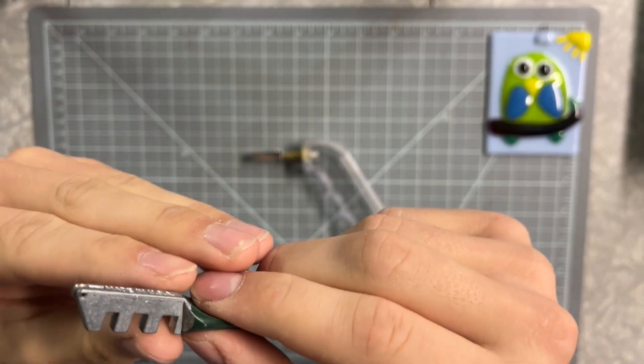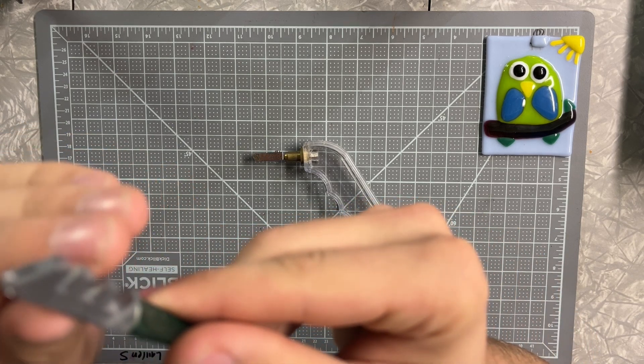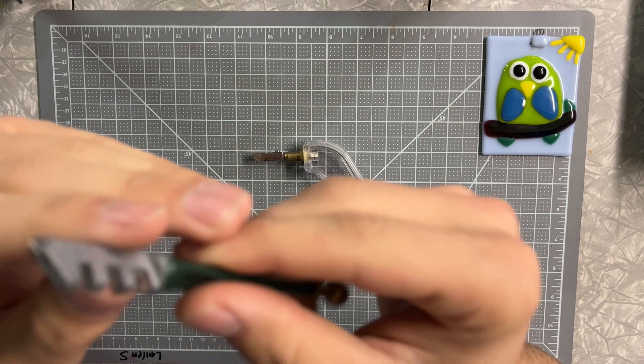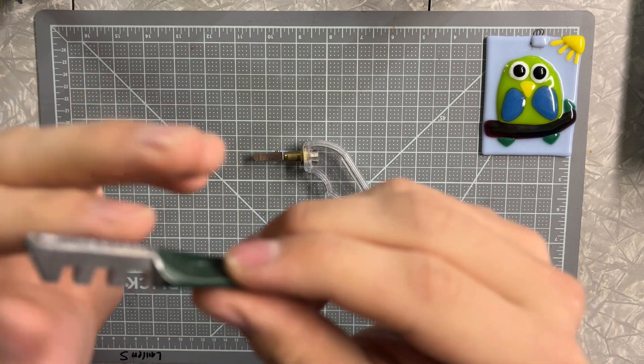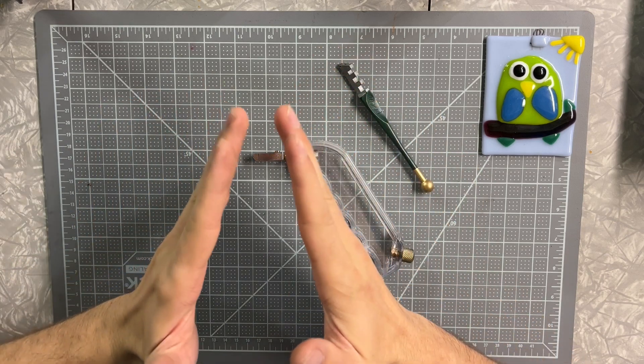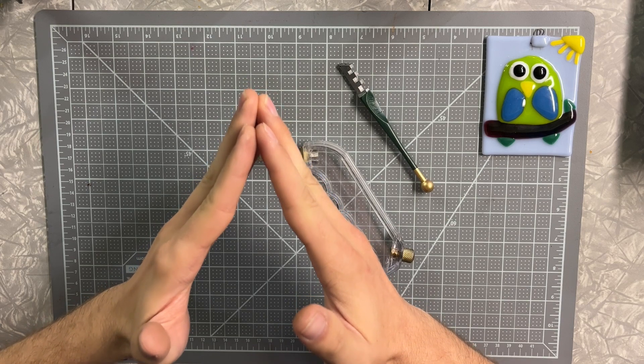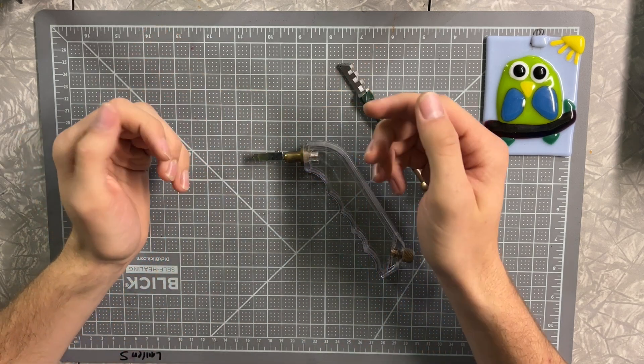The way that a glass cutter works is it has a little tiny wheel at the very tip here and you can kind of spin it with your finger. Be careful, they can be a little sharp. On the tip of this wheel, it comes to a point, and that peak is what's used to score the glass.